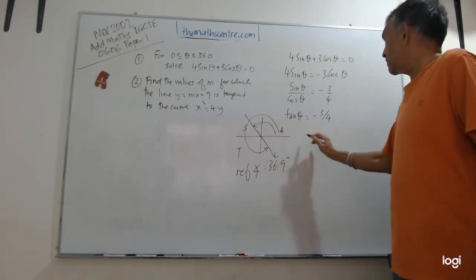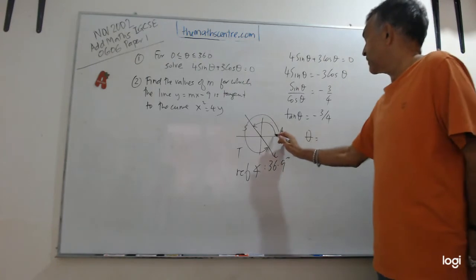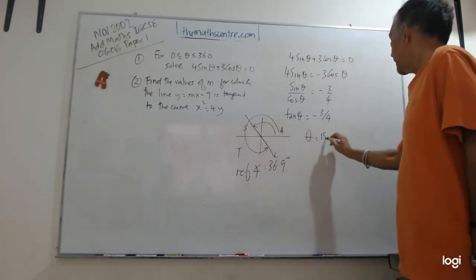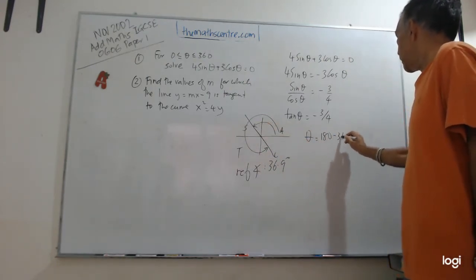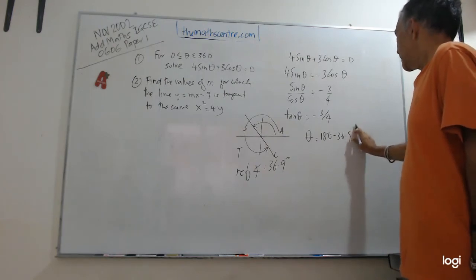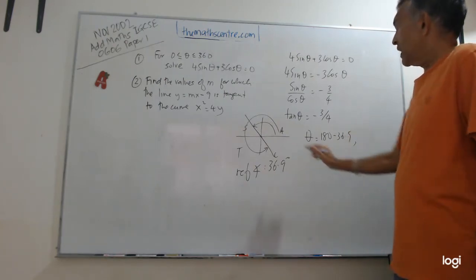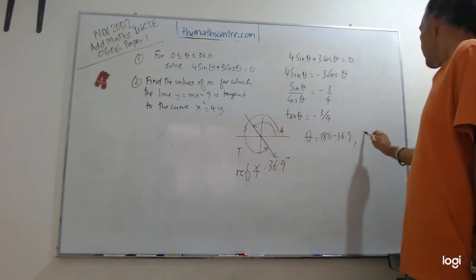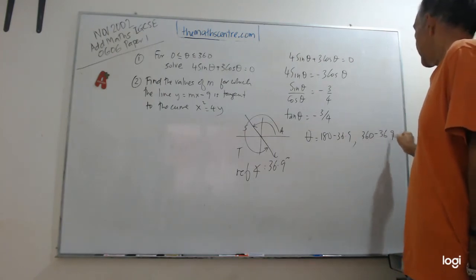So now I need my answers. My first angle here will be 180 minus 36.9. And my second angle will be 360 minus 36.9.